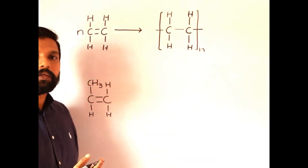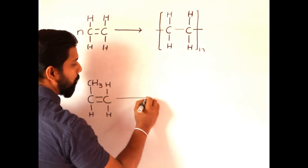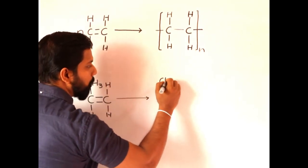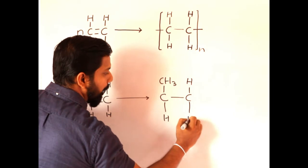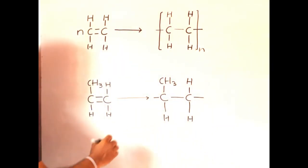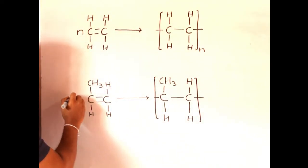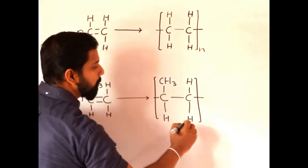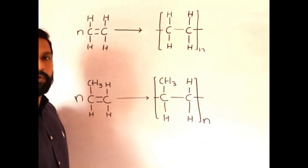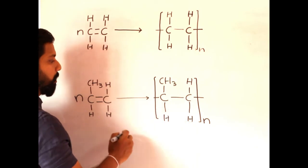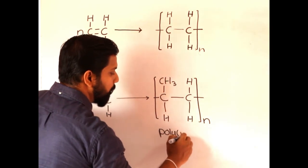Now we will write the equation for the formation of polypropene. Here is the propene molecule. Write the propene repeat unit again, put the extended bonds, and put the bracket. So n number of propene molecules react, and n units of the repeat unit will be formed. This represents the balanced chemical equation for the formation of polypropene.